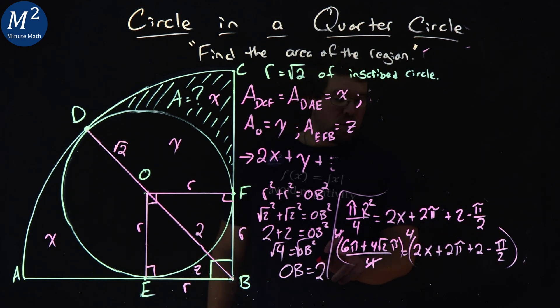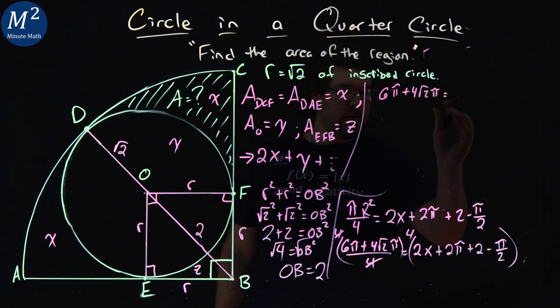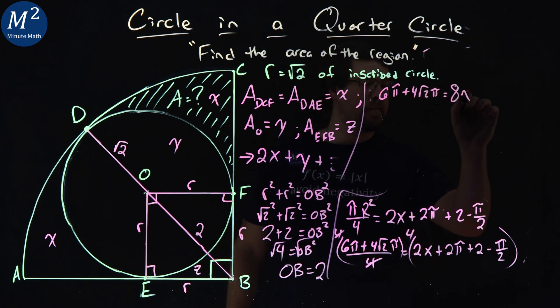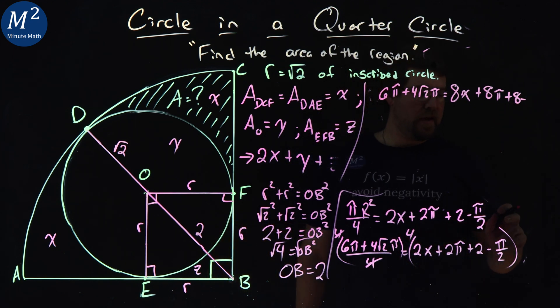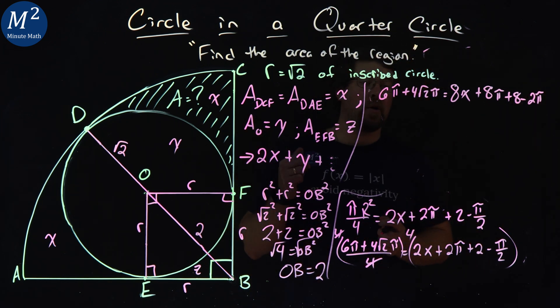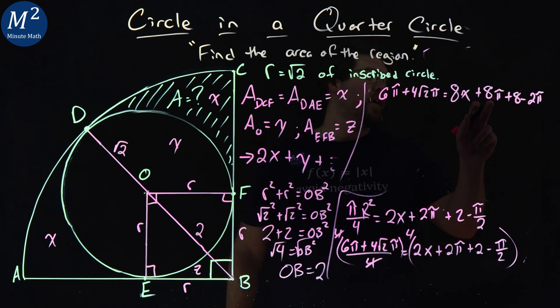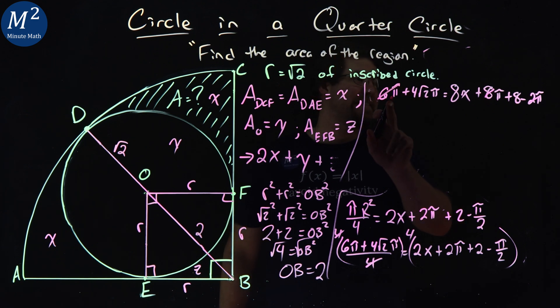Equals, multiplying that out, we have 6 pi plus 4 square root of 2 pi is equal to 8X plus 8 pi plus 8, multiplying it all out, minus, for here is 2 pi. All right, so we got a lot of pi's and X's, we need to combine our like terms. Well, luckily for us, that's 8 pi minus 2 pi gives me 6 pi and cancels out with that 6 pi.